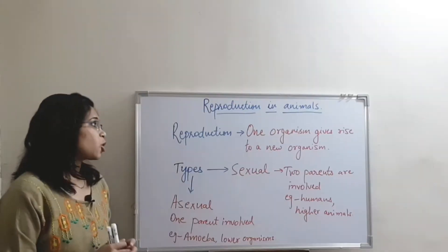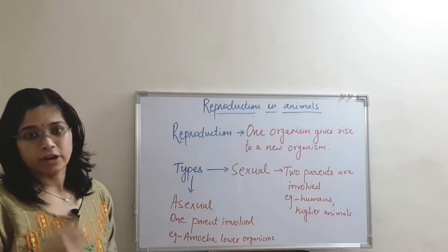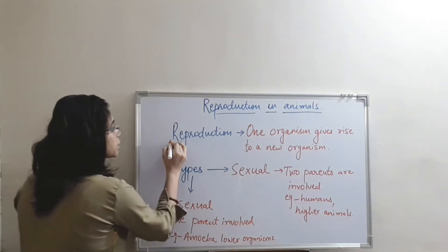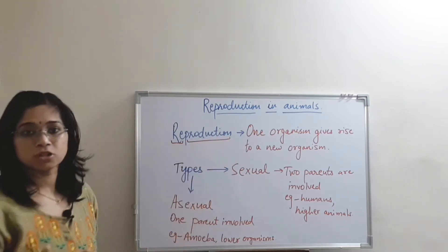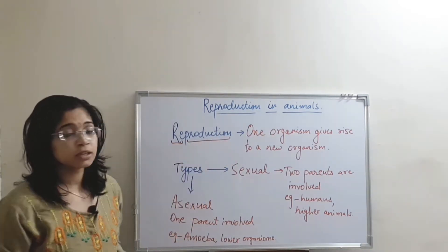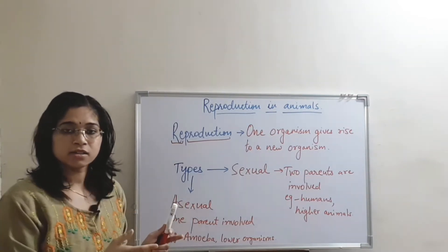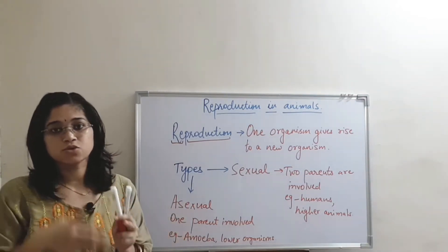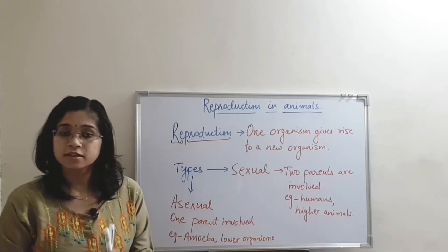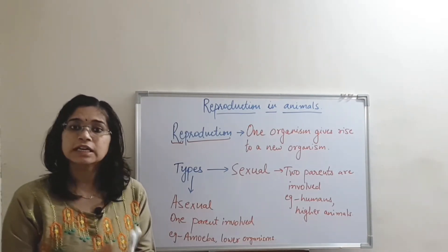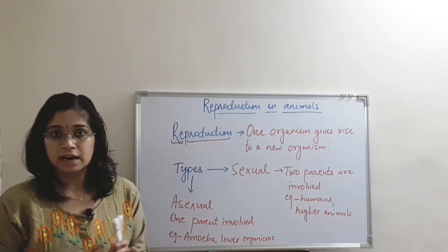Reproduction is the process through which an organism gives rise to a new organism. Here, 're' means again and again, and 'production' means synthesis of something. So in reproduction, again and again an organism gives rise to a new organism. Before going into detailed explanation, it is important to know what is the need of reproduction in our life.